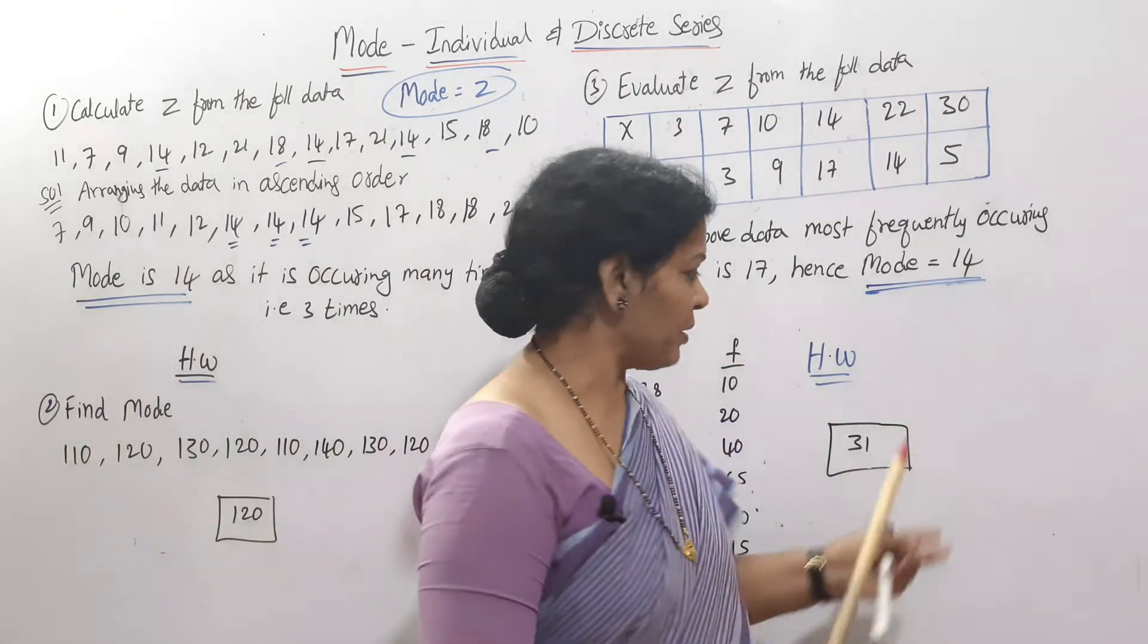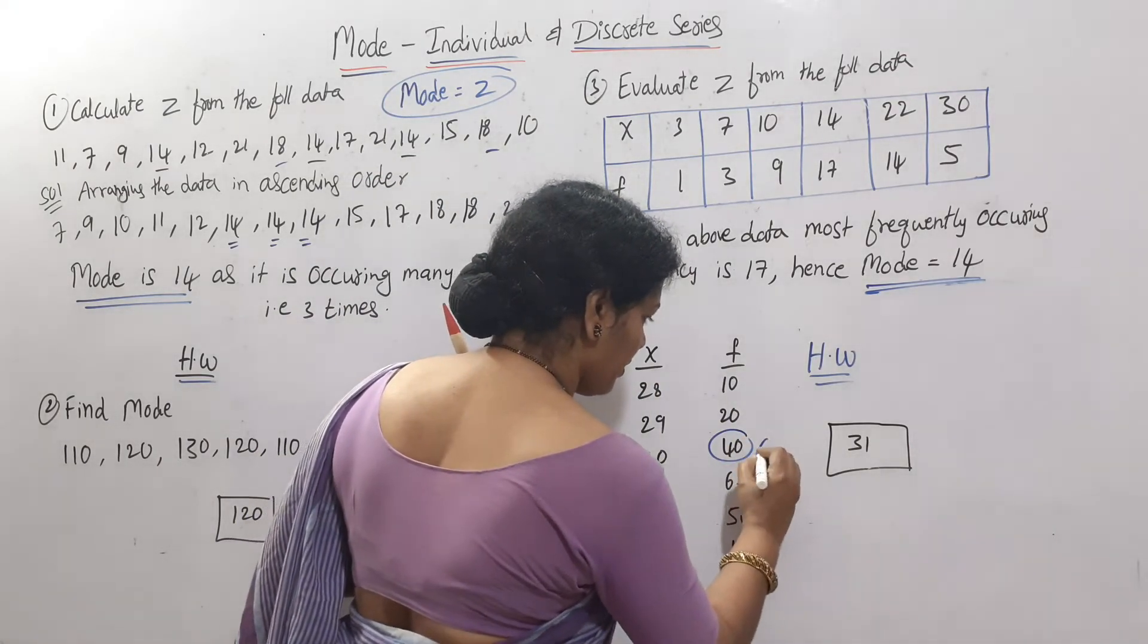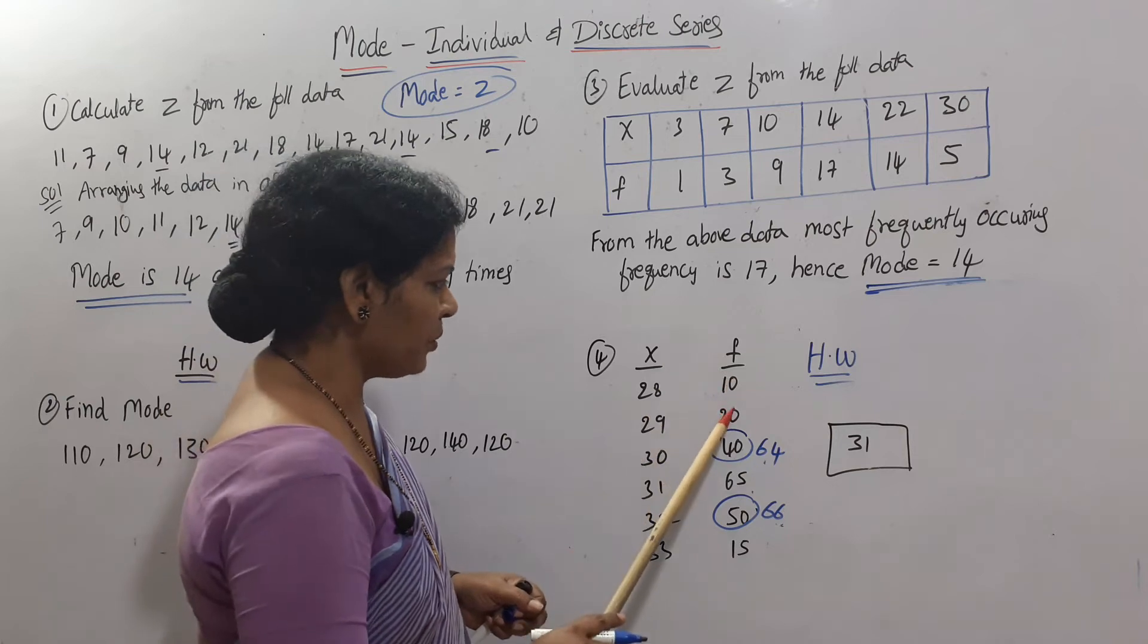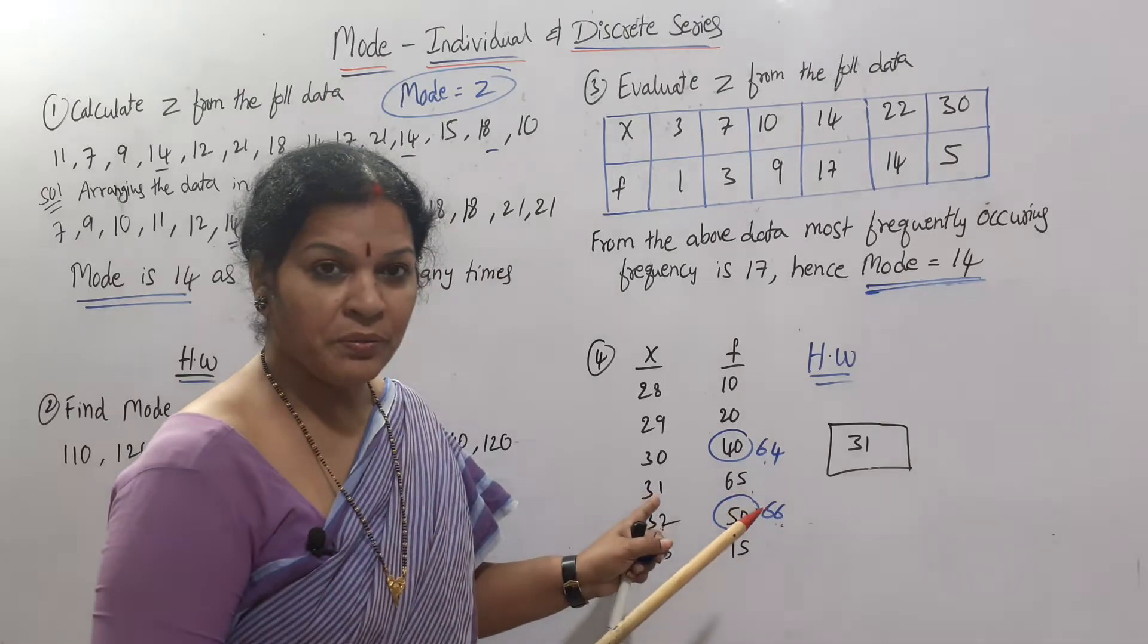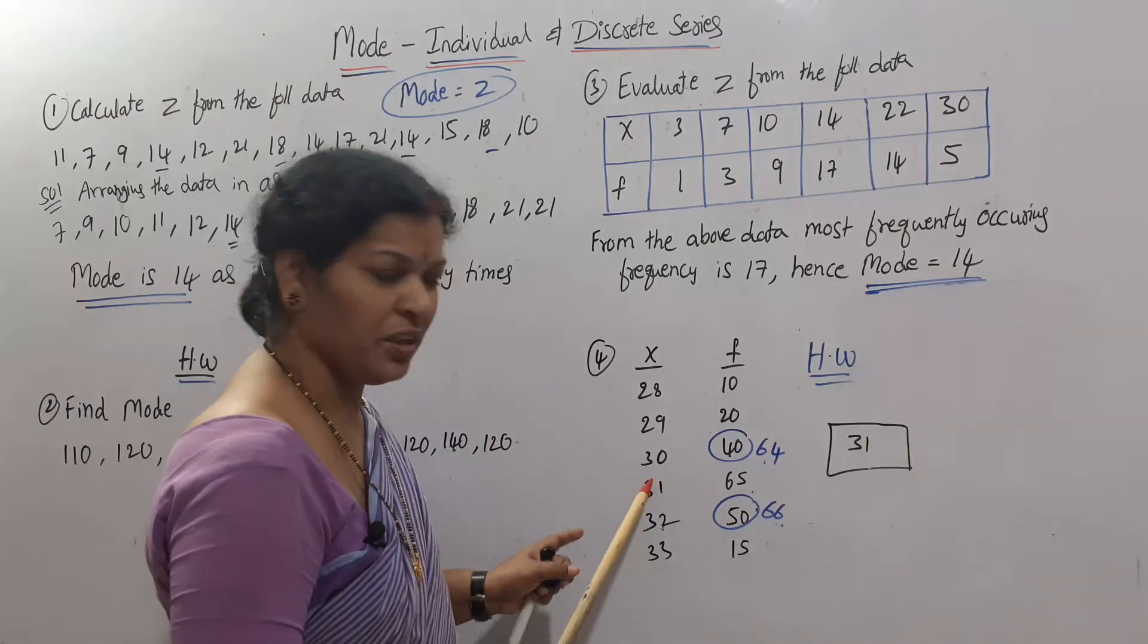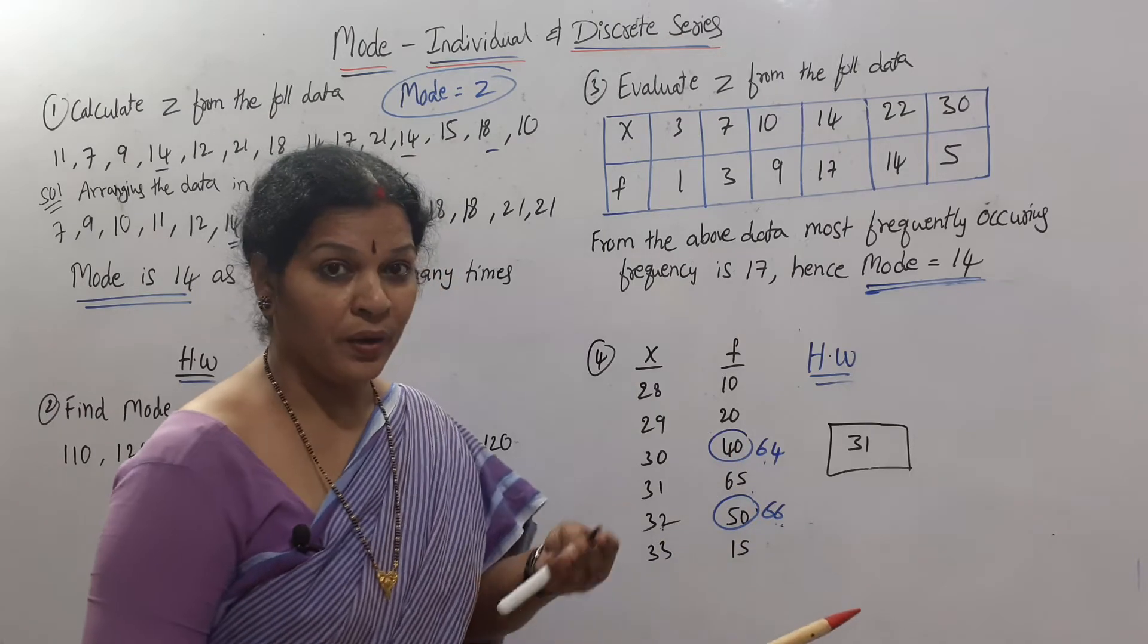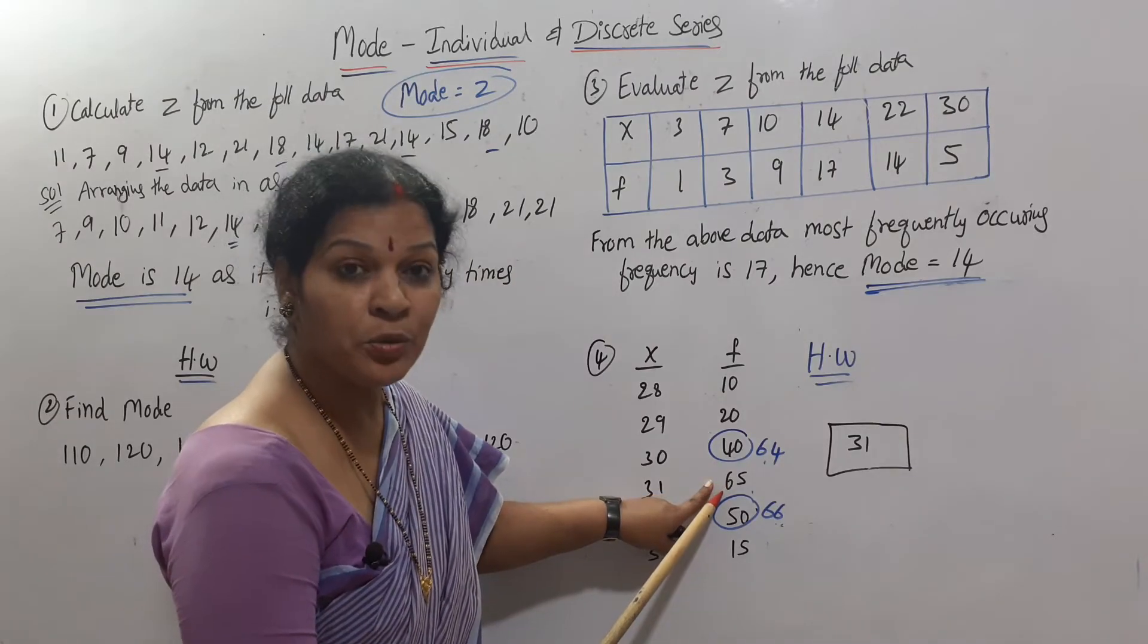In individual series, no problem - you can easily find mode. But in discrete series, sometimes the frequency values can be like this: suppose the frequencies are 10, 20, 64, 65, 66, 15. The most frequently occurring is 65. Generally we can say 31 is the mode, but when you find numbers near to the maximum - like 64 and 66 near to 65 - you cannot simply say mode is 31 just because it is repeating many times.